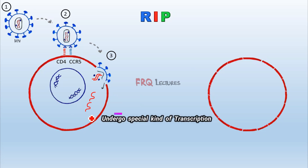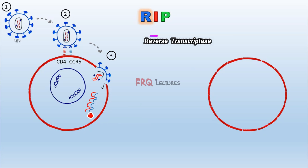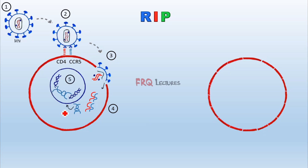Inside the macrophage, two identical RNA strands undergo a special kind of transcription. Unlike the normal central dogma where RNA is synthesized from DNA, here DNA is synthesized from RNA — a process known as reverse transcription, the opposite of normal transcription. This is carried out by the reverse transcriptase enzyme. The resulting viral DNA forms a double helical structure and then tries to enter the nucleus to integrate with the host DNA.